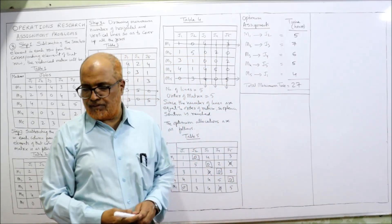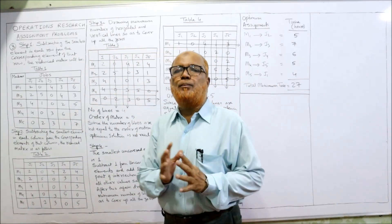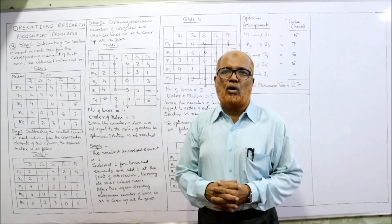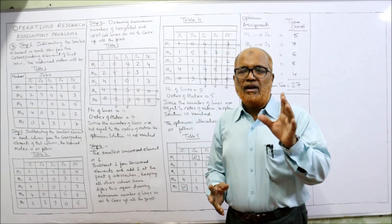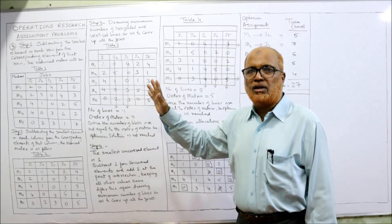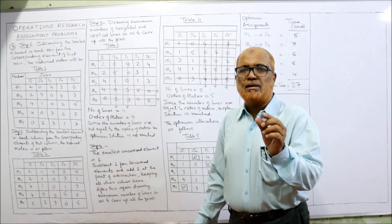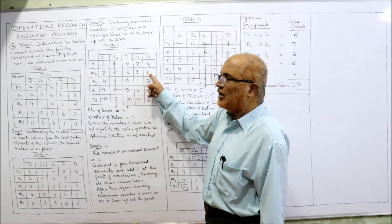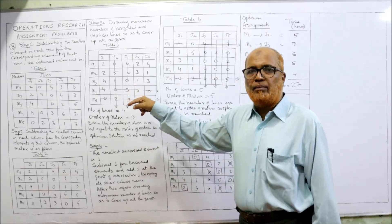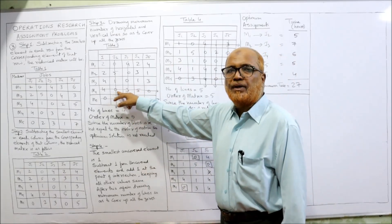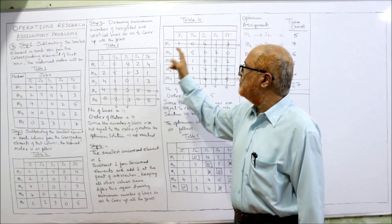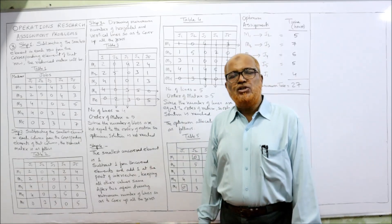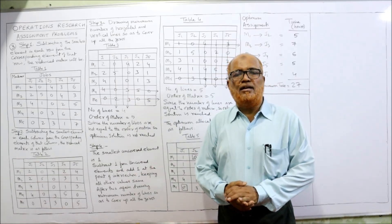Total minimum time = 5 + 7 + 6 + 5 + 4 = 27 hours. The new concept in this third problem is handling the case where the number of lines is not equal to the order of the matrix — meaning the optimum solution is not yet reached. In that case, find the smallest uncovered element, subtract it from all uncovered elements, add it at intersection points, keep covered values the same, and draw lines again. Inshallah, the 4th problem will start in the next video.